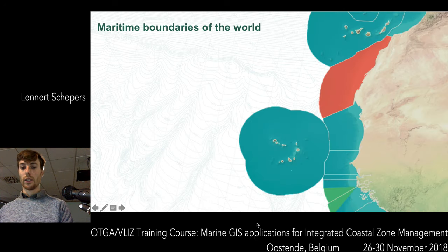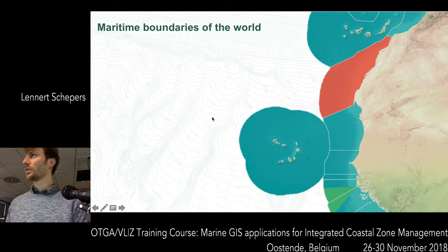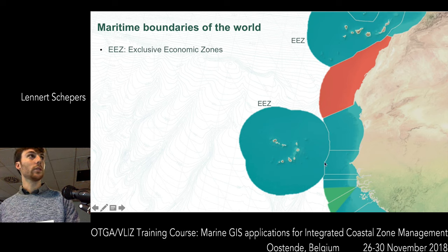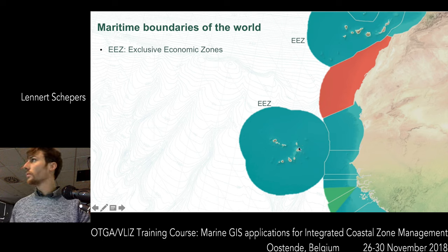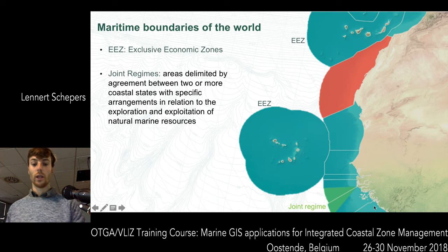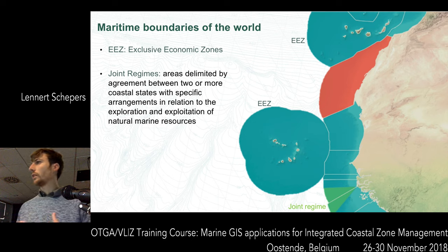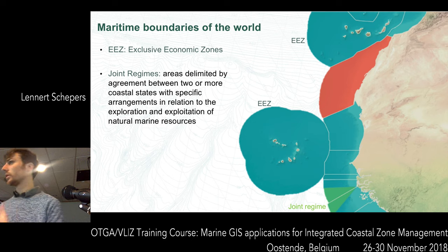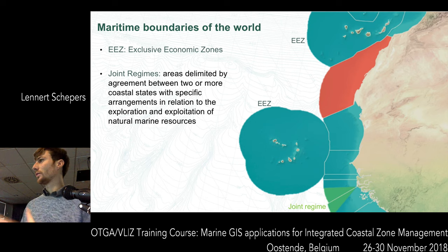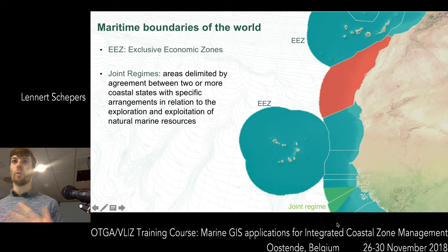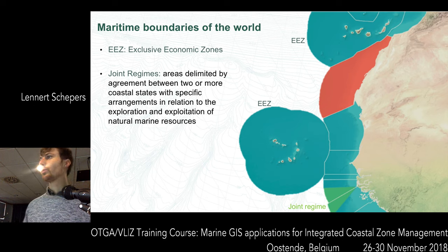We have several statuses for the Exclusive Economic Zones. The normal EEZs are shown in blue. We also have joint regimes - those are areas where two or more countries agree that they have a special status. Depending on the agreement, for example it can mean that both countries have the same rights to do some fishing in that area.